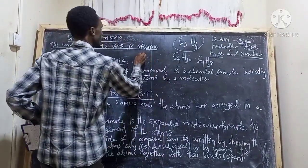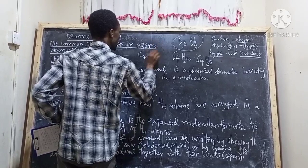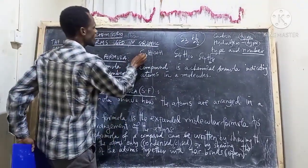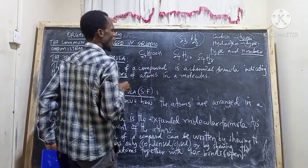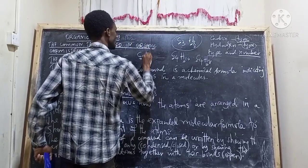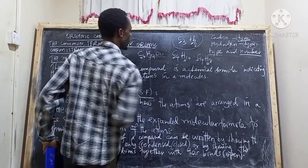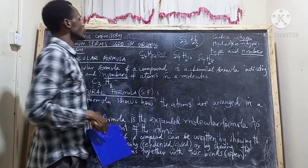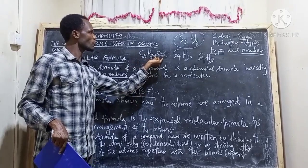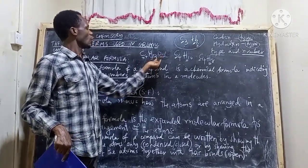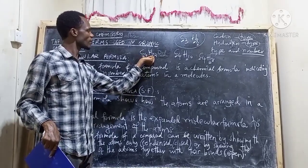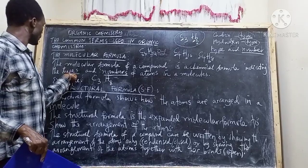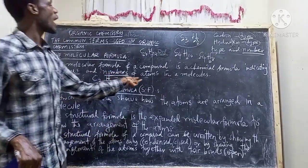We may also have a molecule like C4H2O2, which is made up of carbon, hydrogen, and oxygen. How many carbons? We have four. How many hydrogens? We have two. How many oxygens? We have two. So the molecular formula indicates the type of atoms and the number of atoms available in the molecule.